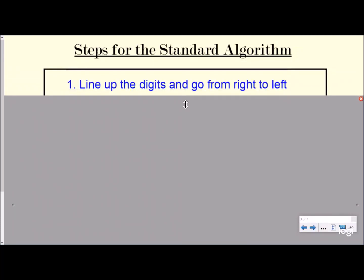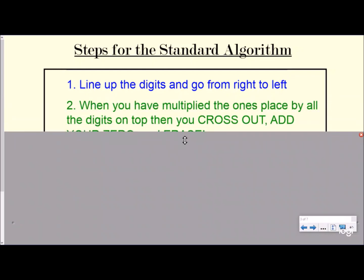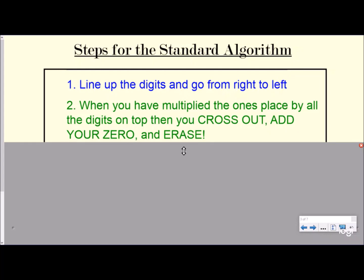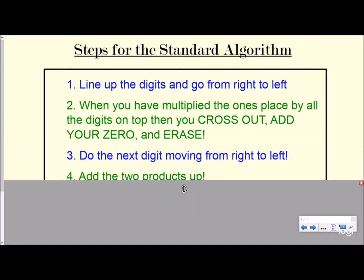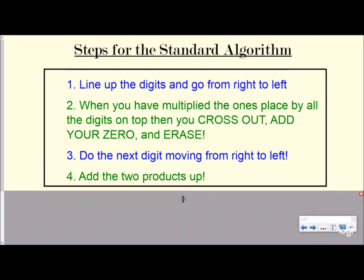And so our steps — please pause the video and write these down. You want to line up the digits with the ones place, and then you're always going to multiply from right to left. When you have multiplied the ones place by all the digits on top, then we do what I like to say: cross out, add your zero, and erase. Those are the steps you do every single time in the order that you do them. And then if you have a digit in the tens place, go ahead and do that digit going from right to left on top. And then at the end, you're going to add all the products up.